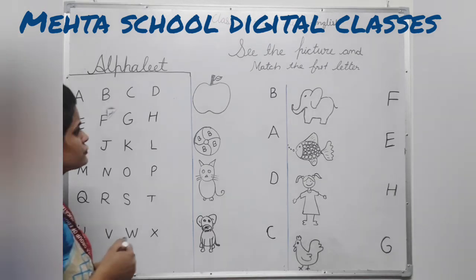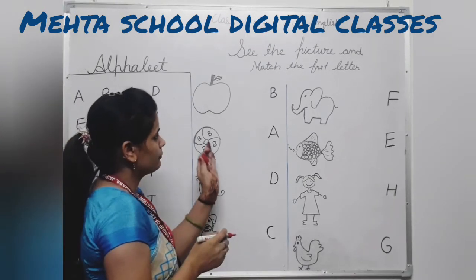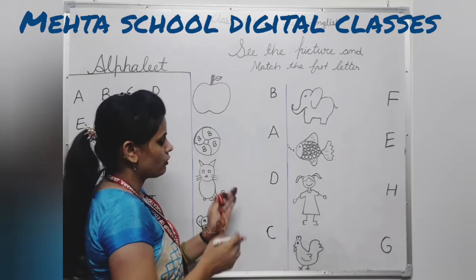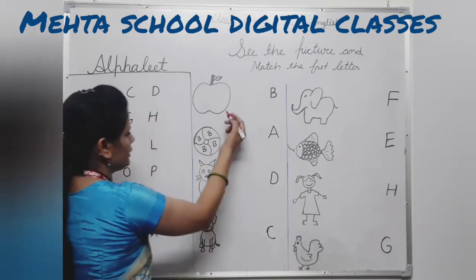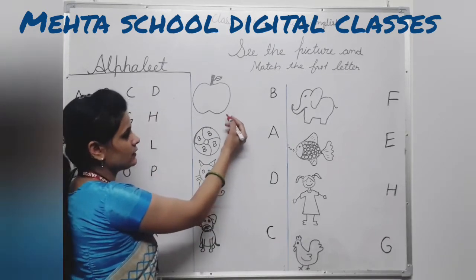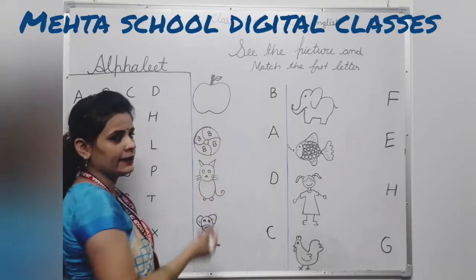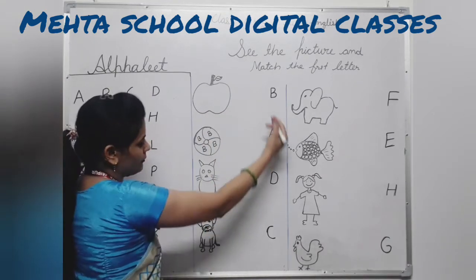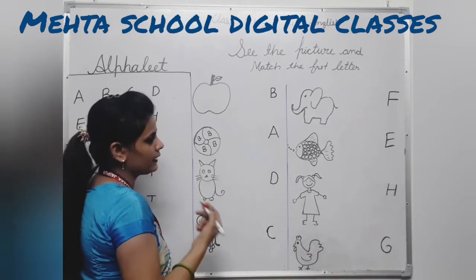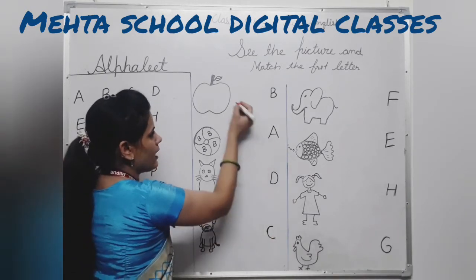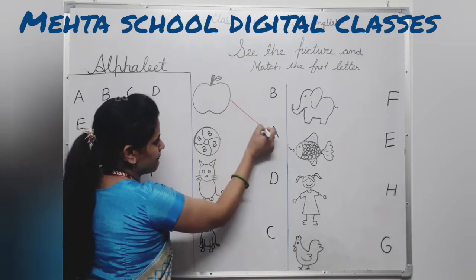What is this? A ball. Now, if you see A for apple — where is A? This one. A for apple — match A.